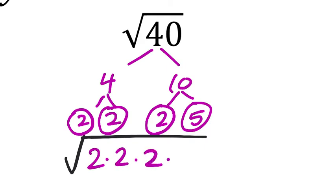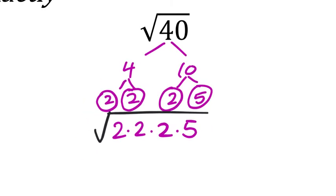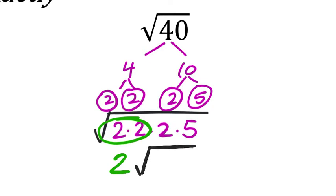2 times 2 times 2 times 5. Are there any matching factors? Yes, there's a set of 2s that match. There is another 2 here, but it doesn't have anything to match with. So there's a 2 that matches — it just comes out as an individual 2 from its perfect square. So 2 times 5 there is 10, still in the square root. 2 times the square root of 10, done.